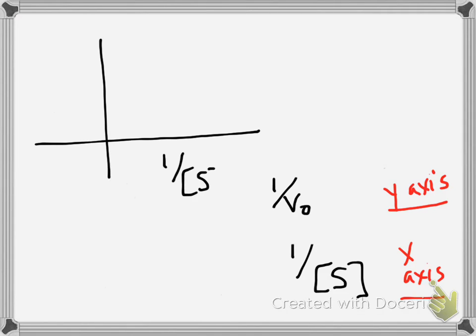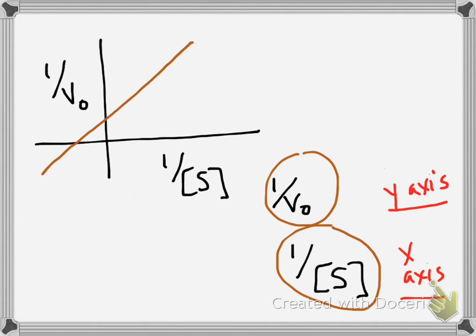So this is your Lineweaver-Burk plot. And as I mentioned, it puts your data into a straight line when you plot 1 over velocity versus 1 over substrate concentration. And that way you can pull out KM and Vmax from your graph.